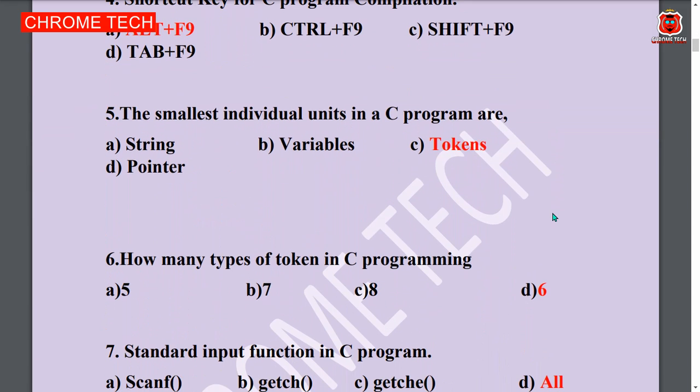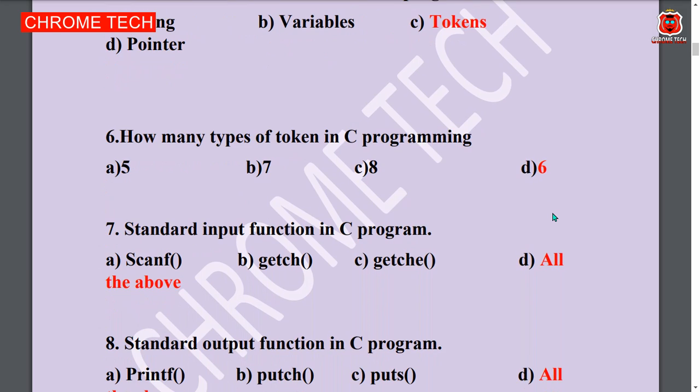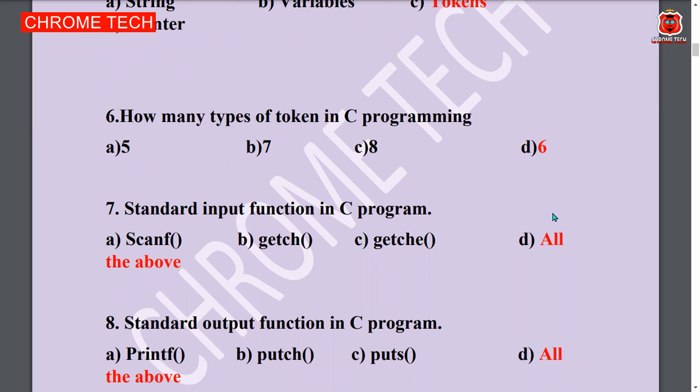Fifth question: The smallest individual unit in a C program are tokens. Option C is the answer. How many types of tokens in C programming? Six types. Option D is the answer.